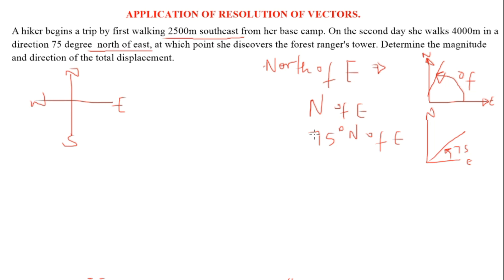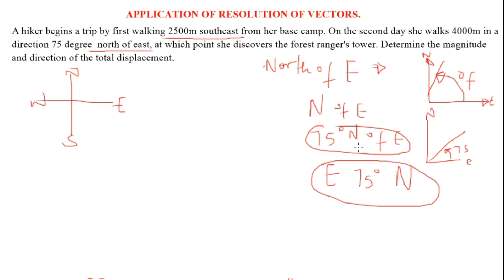We can rewrite '75 degrees north of east' as 'east 75 degrees north' — they are the same. The angle is measured between east and north. 'East 75 degrees north' means from the east, take 75 degrees and head toward the north. This form is more direct. Now let's solve the problem.